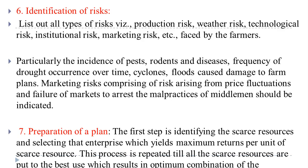Step 7 is preparation of a plan. The first step is identifying the scarce resources, then selecting the enterprise that yields maximum returns per unit of scarce resource. This process is repeated until all scarce resources are put to the best use, resulting in an optimum combination of resources and enterprises.